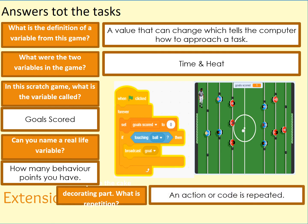Here are the answers. First of all, a variable is a value that can change, which tells the computer how to approach a task. The variables in the game are time and heat. The variable in the Scratch code is goals scored. A variable in real life — there are hundreds of these and you've all got different ones.